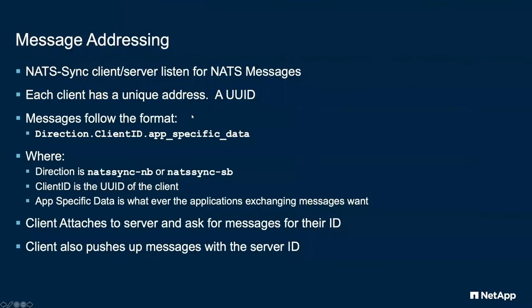To get messages going to the right private cluster, we need to have some sort of addressing scheme. NATS makes this really easy because of the selectable subject line. We follow a simple naming pattern for our subject lines. The pattern right now is: the subject, the direction the message is going — either northbound or southbound (southbound meaning to the client, northbound meaning back up to the server) — the client ID, and then any specific data for the service. This would be what you'd normally have for a NATS message when you're not trying to add cross-cluster synchronization.